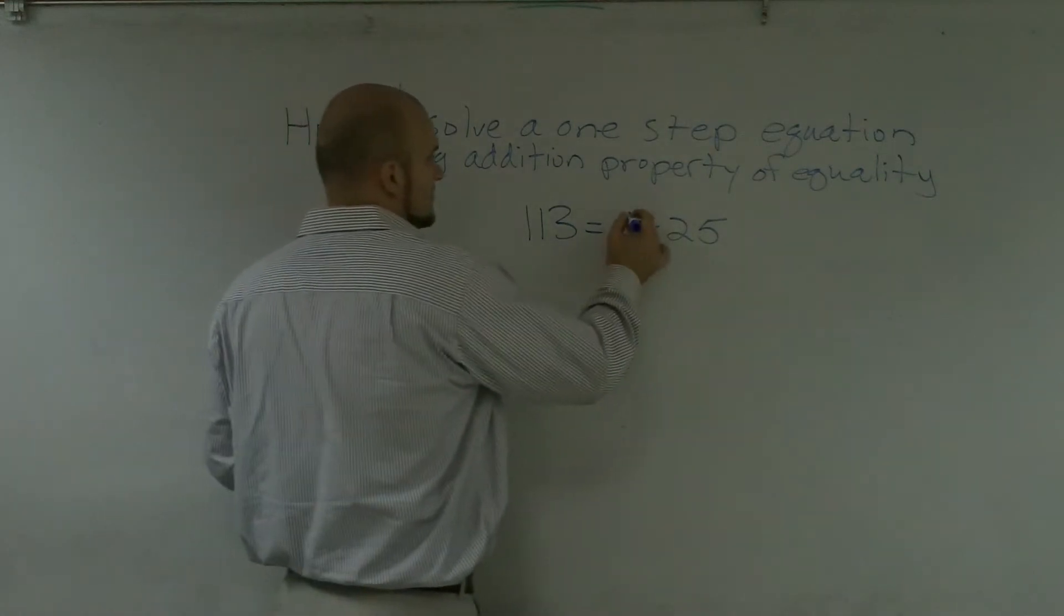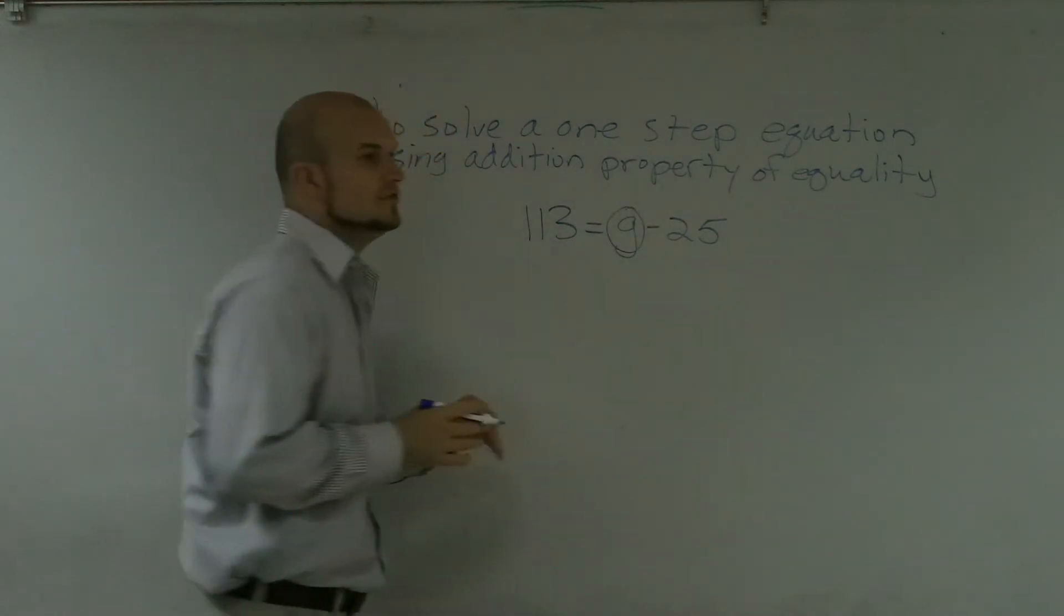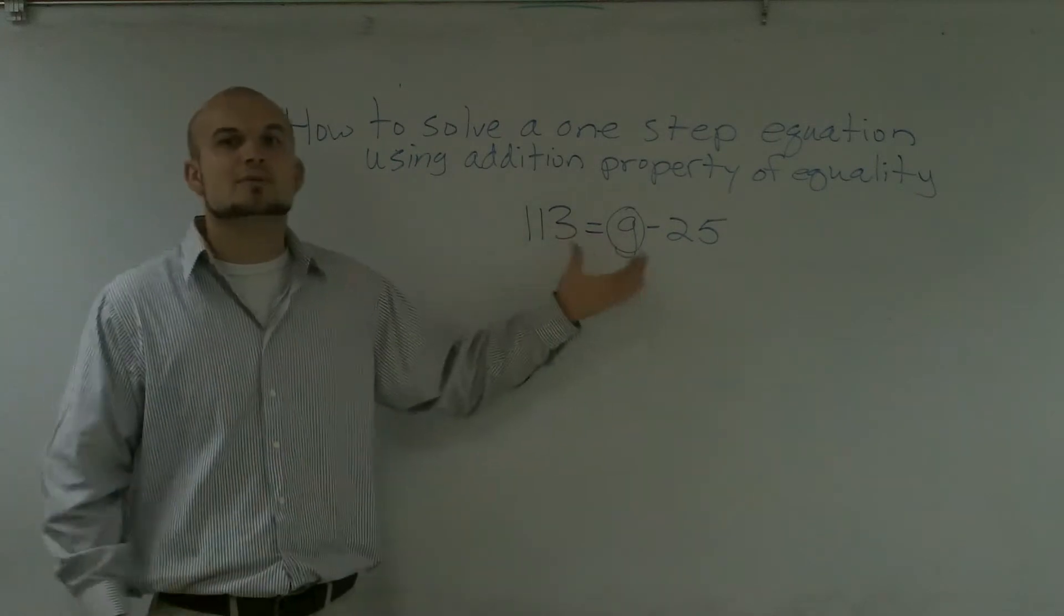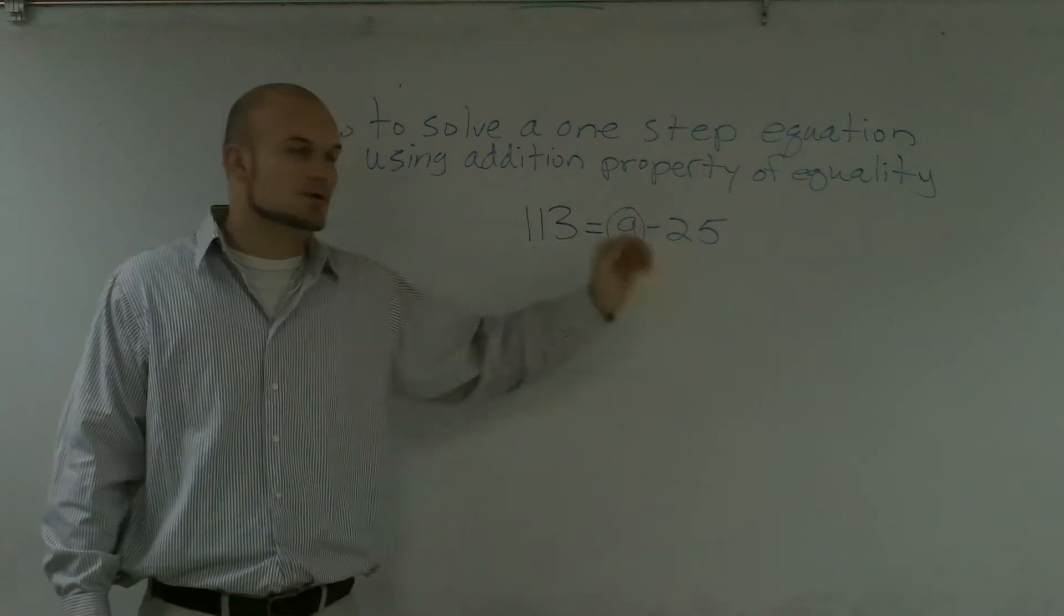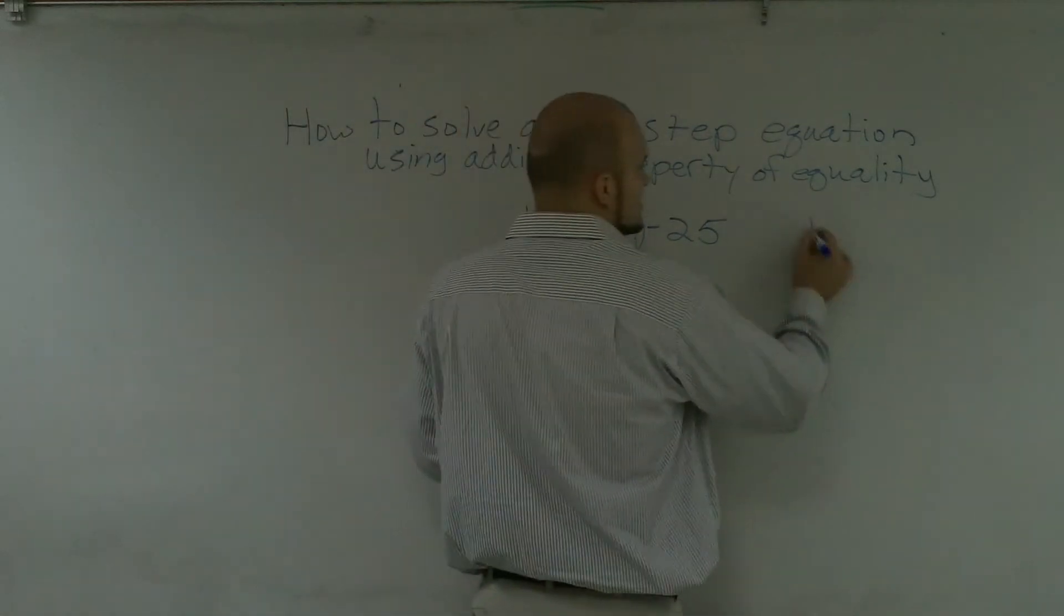The first step is to circle our variable. And the reason why I tell you to circle the variable is because you need to remember that the variable is what you're solving for. And when I say solve, you're trying to solve for what is the value of this variable. So you're going to circle your variable. So that's going to be your step one.